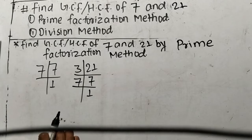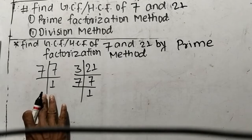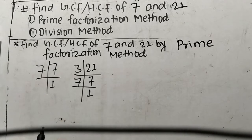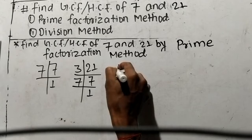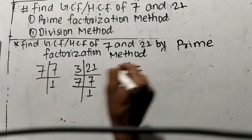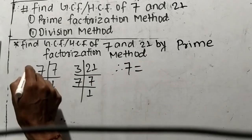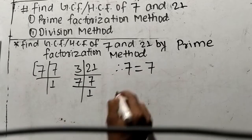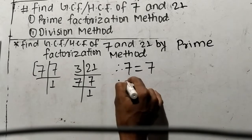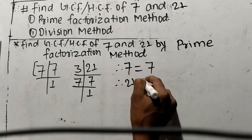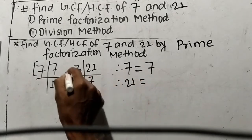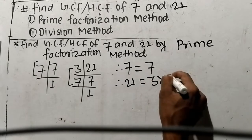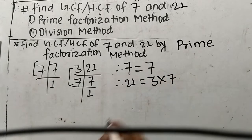As you look here, we have found out the prime factors of 7 and 21. From these prime factors we can write: 7 is equal to 7, and in the same way 21 is equal to 3 times 7.